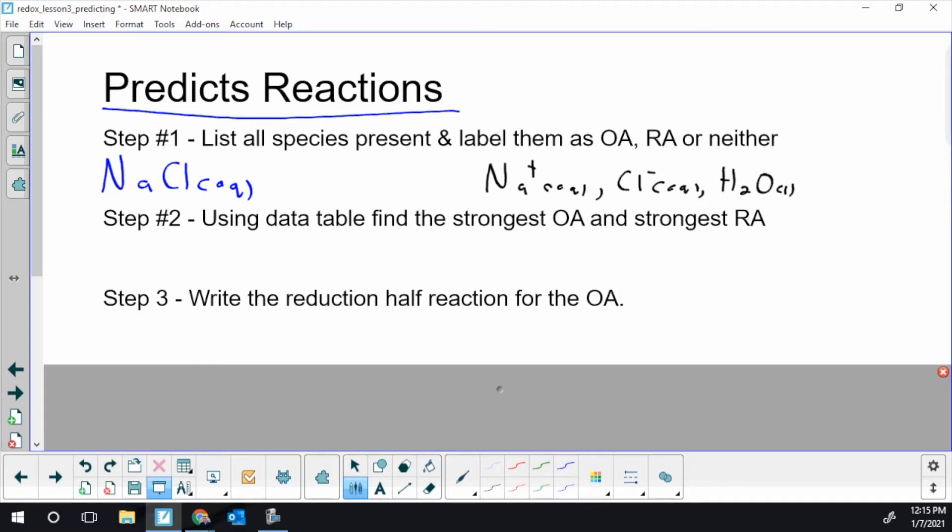Second step, you're going to scan your table for everything in the list from step one and find the strongest oxidizing agent and the strongest reducing agent. Remember, in your table, the strongest OA is up high.